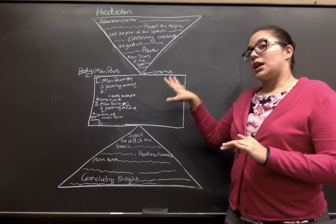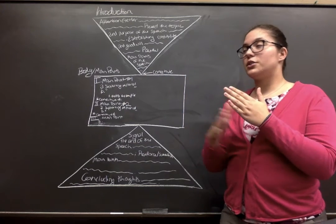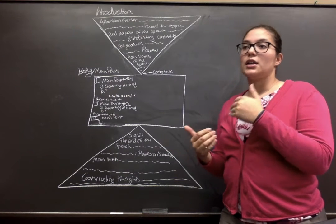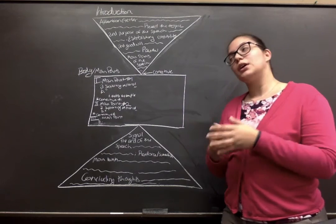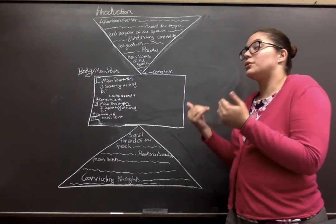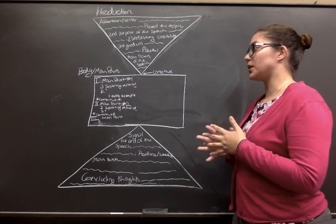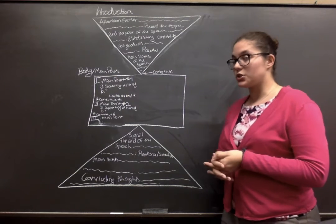Then there's usually a connective. You could word your preview in such a way that it connects it well enough. There is a type of connective called an internal preview. So you would be previewing what's going to happen next. So that could be your connective if you word it correctly. Now we move on to the body and the main points of your speech.